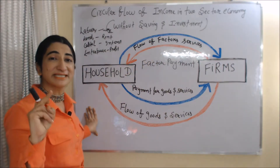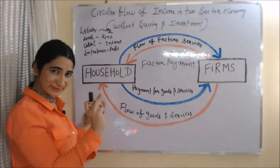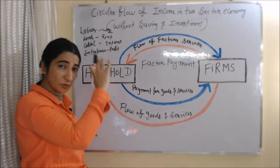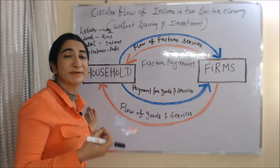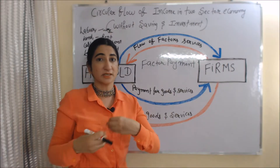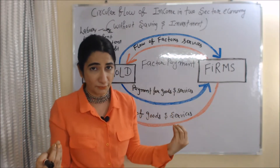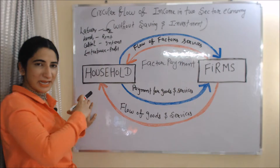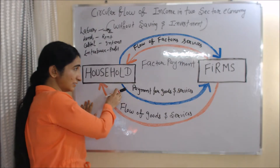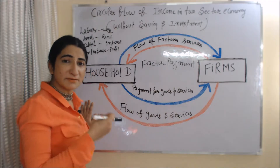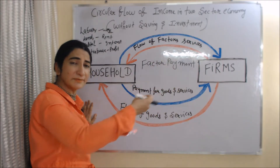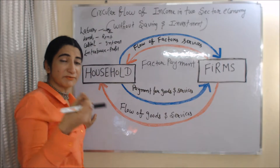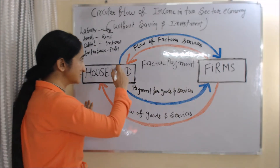In a two sector economy without saving and investment, we have only two sectors: the household sector and business firms. Household sectors give their factor services to business firms in the form of labor, land, capital, and enterprise. Sometimes the household sector works as labor, sometimes they give their land on rent, sometimes they give their capital for use, and sometimes they contribute as enterprise.